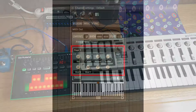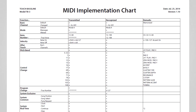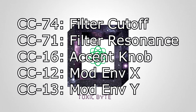The MIDI Out VST in FL Studio also offers a bunch of programmable knobs. We will link them to control the filter cutoff, filter resonance, scatter depth, accent, as well as X and Y controls for the mod envelope. To do so, you'll need to check the codes for each setting in the official MIDI implementation chart. In this scenario we will use CC74 for filter cutoff, CC71 for filter resonance, CC16 for the accent knob, CC12 for modulation envelope value X, and CC13 for modulation envelope value Y.